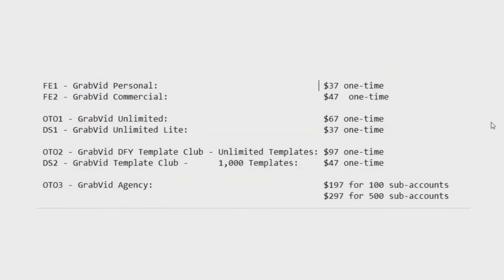Here are the GrabVid upsells. The front end has two options: a personal license for $37 one-time fee, or a commercial license for $47 one-time fee. OTO 1 is the unlimited version for $67, with a light downsell at $37 that's missing some features. OTO 2 is the Done-For-You Template Club with unlimited templates for $97, with a downsell of 1,000 templates for $47. There's also an option to get 500 accounts for $297.